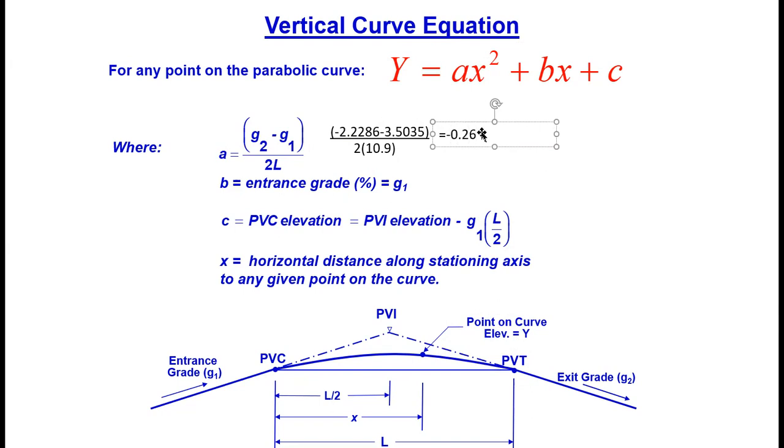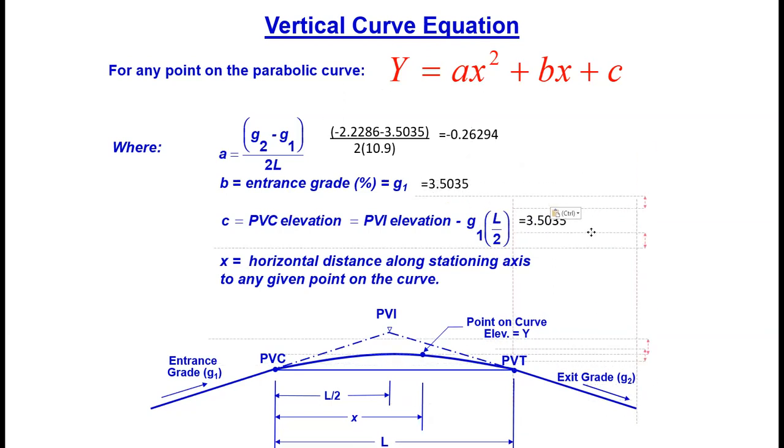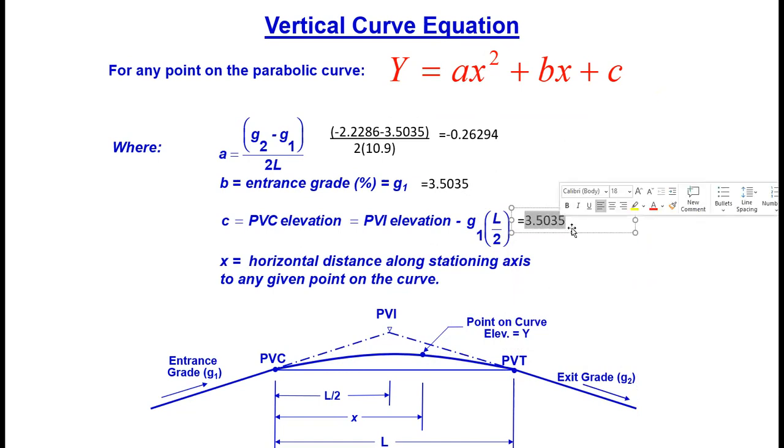For b we have g1, so this is simply going to be 3.5035. For our PVC elevation we can use the equation: PVI elevation, which was given, minus g1 times L over 2. We'll come up with a value of 1297.306 for the elevation of our PVC. This parabolic equation starts from the PVC elevation, then moves along the parameters a and b throughout our parabola. X represents that horizontal distance along the stationing axis.